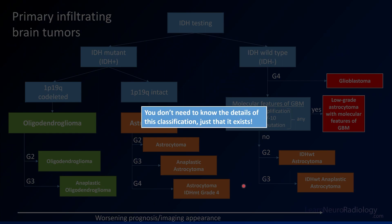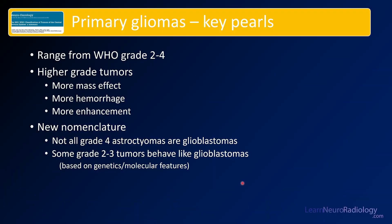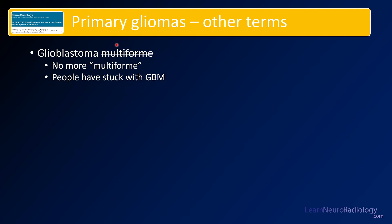In the emergent setting, you don't need to know all the details — just know that this framework exists and that you can look it up if needed, and you may see some of this in the imaging history. The key pearls from primary gliomas: high-grade tumors have more mass effect, more hemorrhage, and more enhancement. Not all grade 4 astrocytomas are glioblastomas, and some grade 2 or 3 tumors will behave like glioblastomas based on genetics. Also note that the term 'multiforme' has been dropped — they're no longer called glioblastoma multiforme, though the GBM acronym remains in common use.